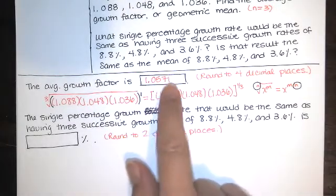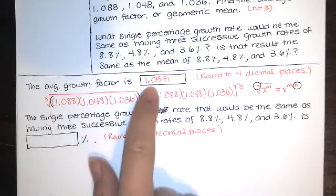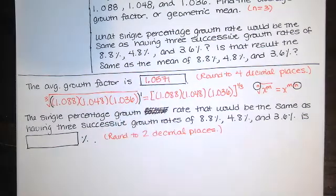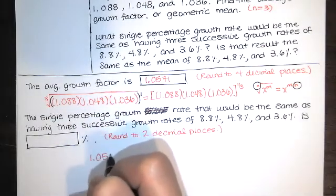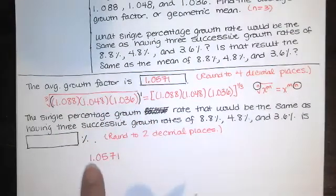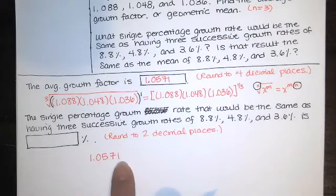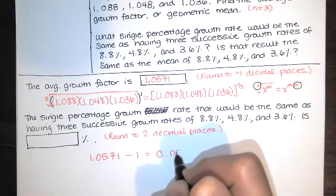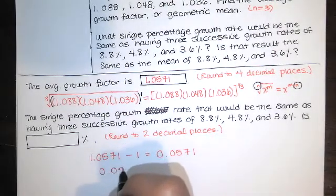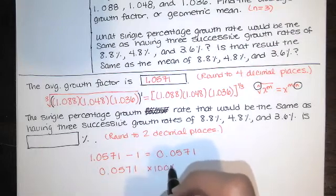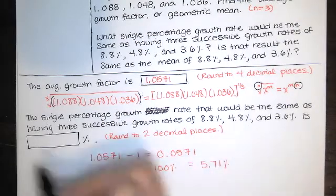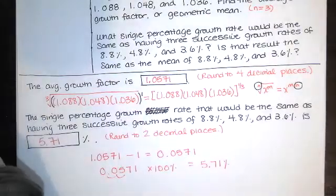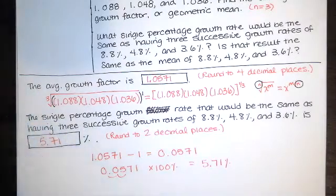So if I want that single percentage growth rate, I'm ignoring the one, and then I'm moving the decimal over twice. So that's going to be 5.71%, and it says round to two decimal places, and that's what we get there. So let me write that down. You're going to take your answer for that average growth factor, and you're trying to find the annual interest rate that's associated with this. So to do that, you subtract one, and then you take that answer, and you multiply by 100%. And remember what happens when you multiply by 100, you're just moving the decimal over twice, and so you get 5.71%.